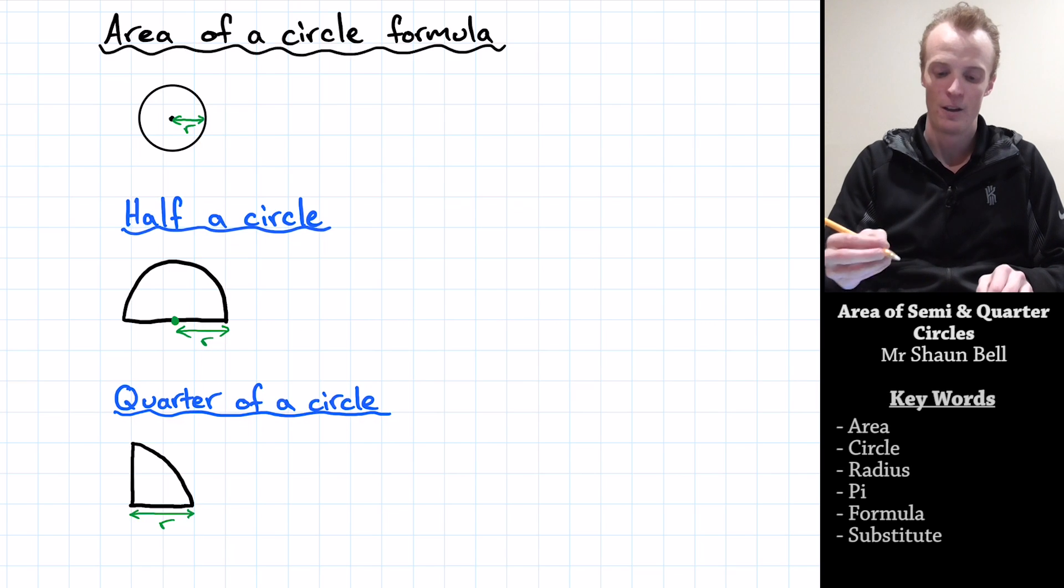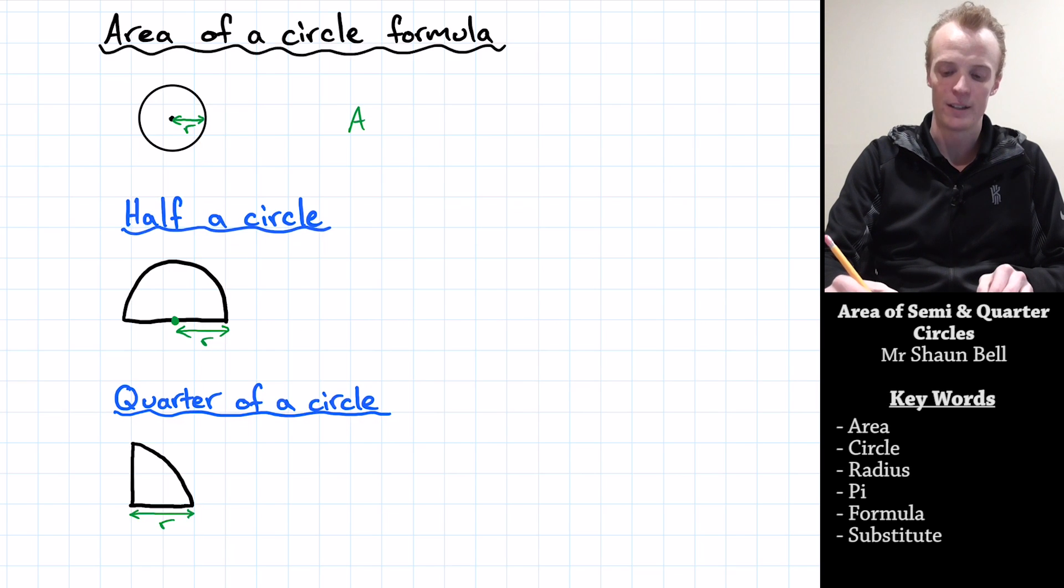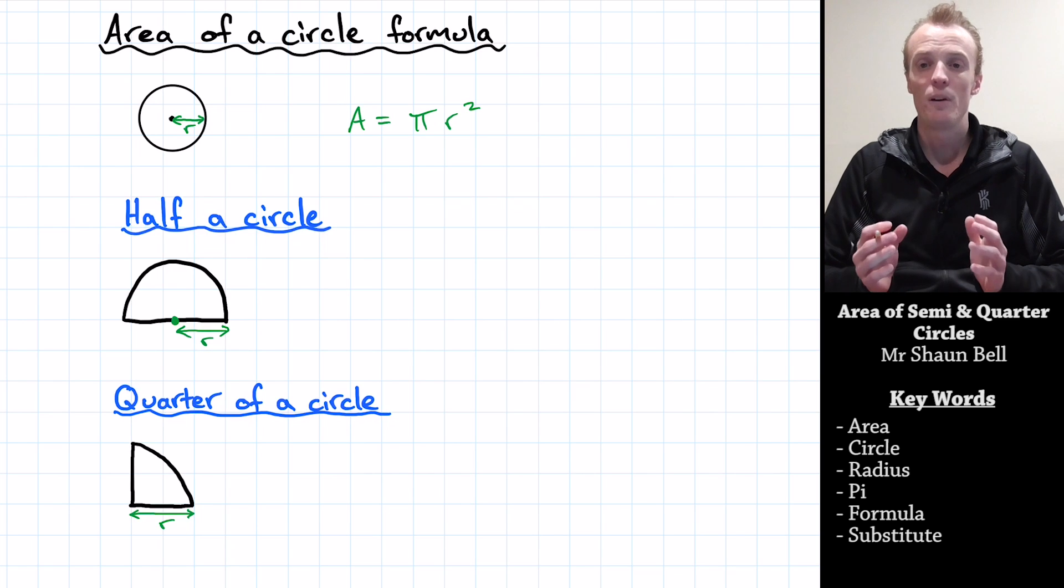Let's begin. In our previous video, we learned that the area of our circle is equal to pi times r squared. But what if we only wanted to find the area of half a circle?